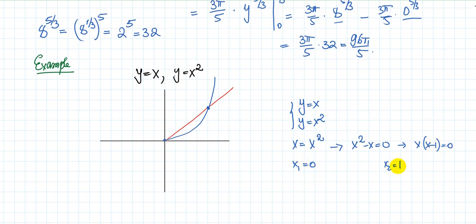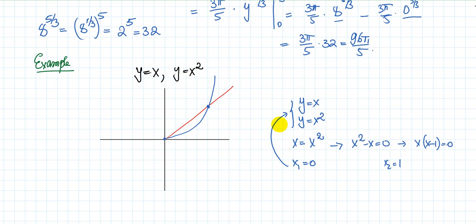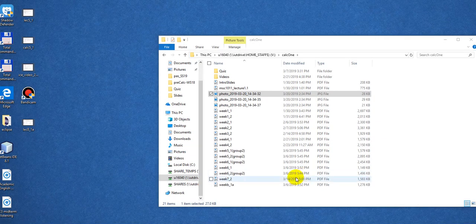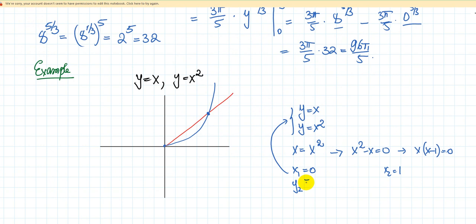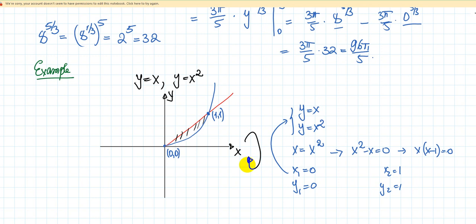The y-coordinates are found by substituting back: y₁ equals 0 and y₂ equals 1. So the two intersection points are (0, 0) and (1, 1). You've got this region between the two curves. Now you need to rotate this region around the x-axis and find the volume.